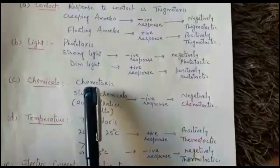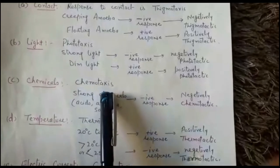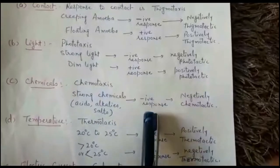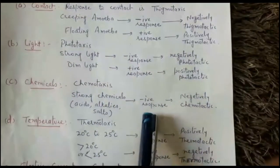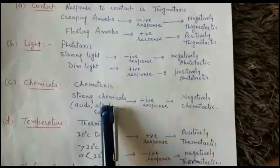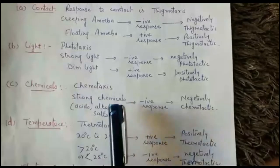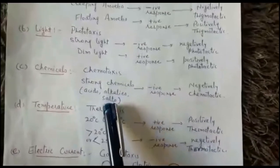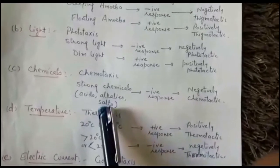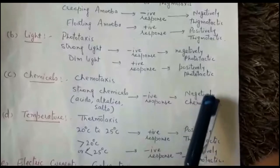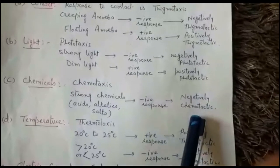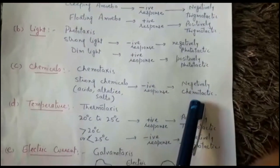Regarding response to chemicals, the response to chemical stimuli is known as chemotaxis. This animal shows negative response to strong chemicals — whether acid, alkali, or salts. So this animal is negatively chemotactic.